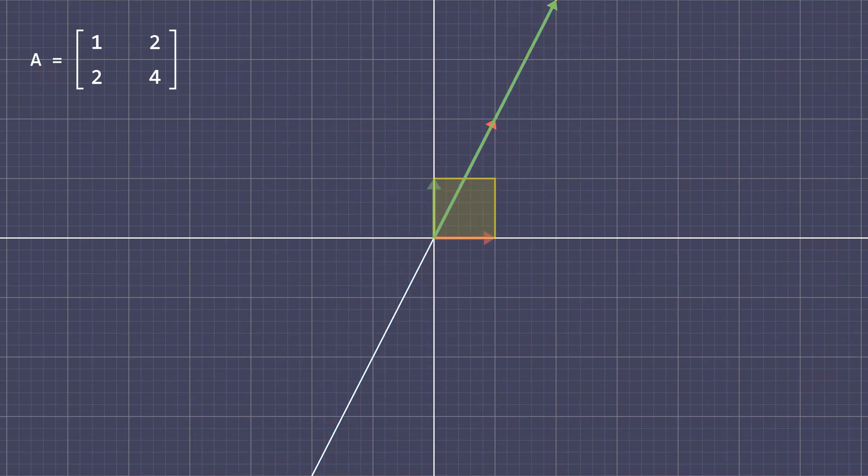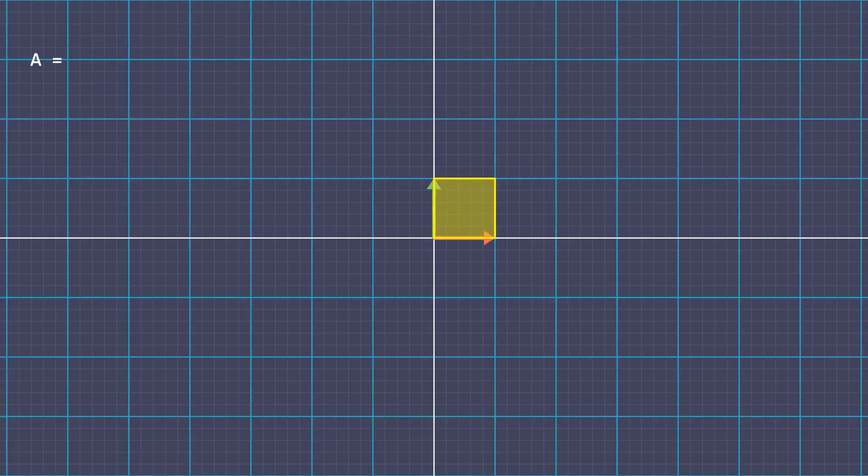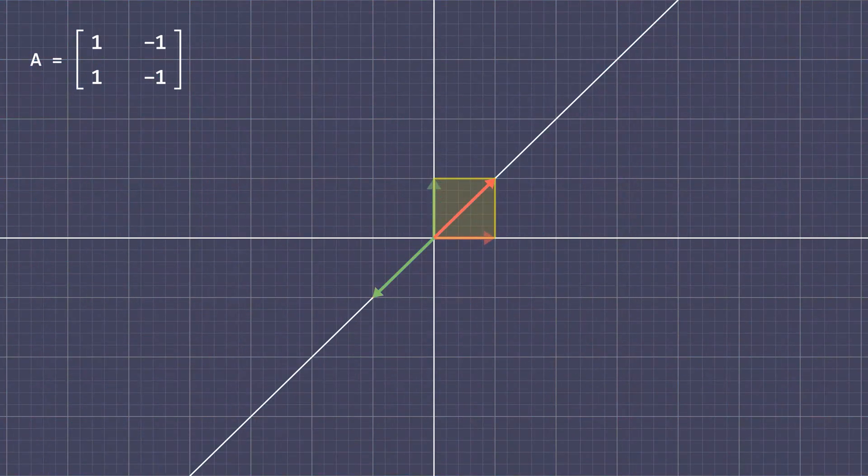In the background you can see the standard basis that are linearly independent and they represent a unit square. Whereas the arrows in the transformed space overlap and the parallelogram described by these vectors has no area. The same happens when the vectors are in opposite direction and when this is the case the matrix is not invertible.